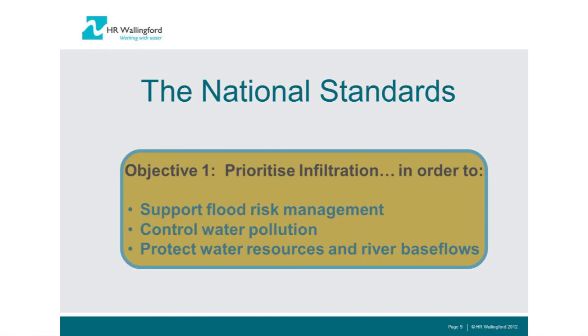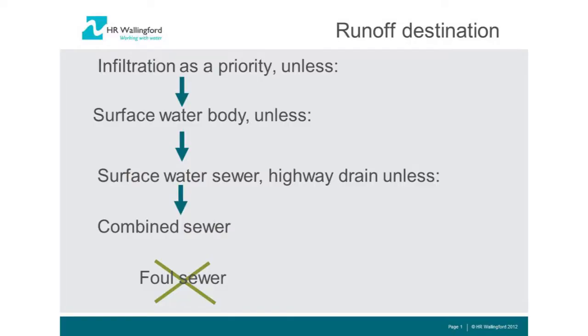The generic objectives haven't changed. The first objective of the standards is to prioritize infiltration. It supports flood risk management, puts water back into groundwater resources, controls pollution, avoids combined sewers, and protects base flows in watercourses. The standards say you need to prioritize infiltration unless there's an environmental risk associated with that process, in which case you need to manage that risk or use another disposal route.